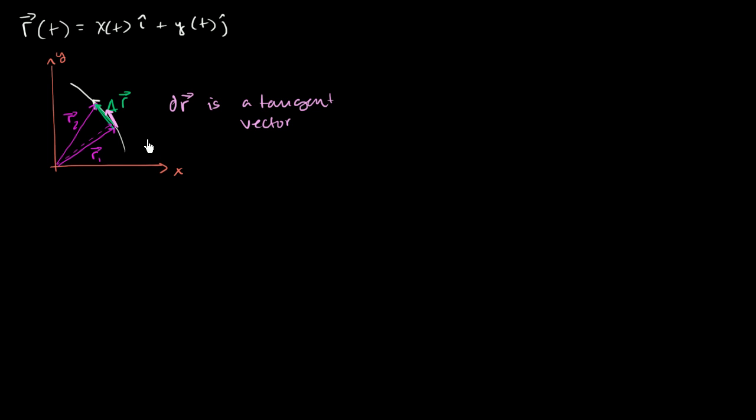And once again, all of this is a little bit of review, but dr we can write as dr is equal to dx times i plus the infinitesimally small change in x times the i unit vector plus the infinitesimally small change in y times the j unit vector.